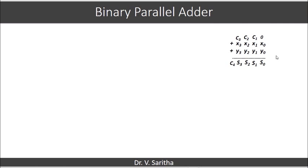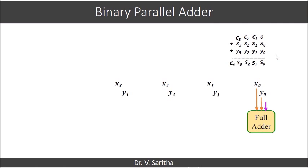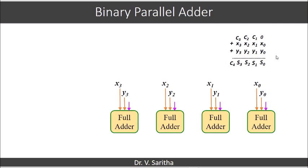Similarly, we complete the operation on two numbers and get a 5-bit output: output carry C4 and sum S3, S2, S1, S0. Let us represent this using the full adder's representation to see how the binary parallel adder is constructed.